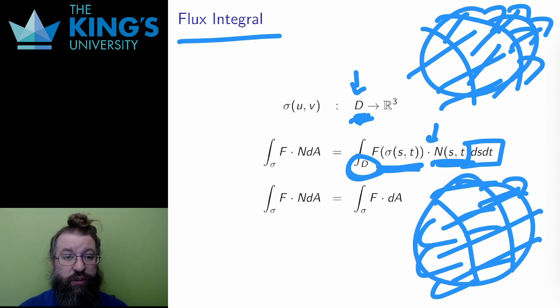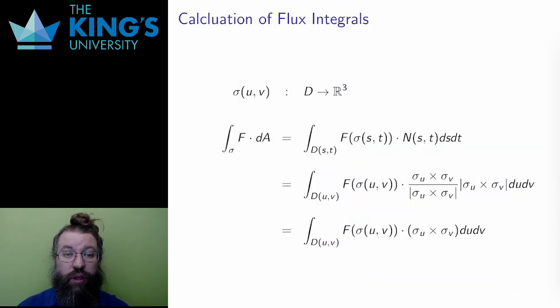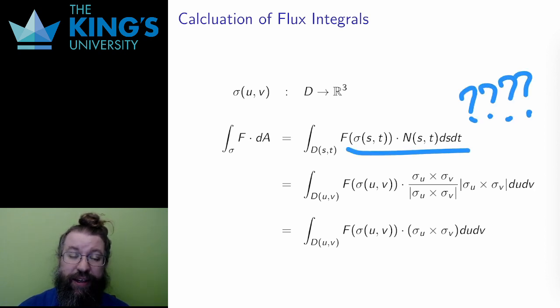The notation for a flux integral is either of these two versions, and I'll mostly use the second, which is a little bit abbreviated, and thus faster to write. So now I have a definition. But it is using a special parametrization, one that I don't actually know how to calculate. It's the right definition, but like for parametric curves, it's not good for calculation. How do I actually calculate a flux integral?